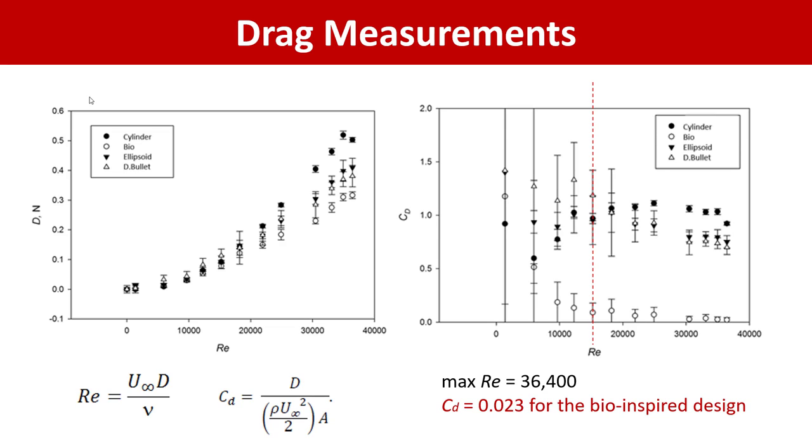If we go to the range of Reynolds number higher than 15,000, we can see that the dynamics in the performance of different designs changes. The cylinder is expected to produce higher drag than other designs. The performance of double bullet and ellipsoid is comparable within uncertainty range, although double bullet performs a little bit better. But the bio-inspired design certainly outperforms all three other designs with asymptotic value at the highest Reynolds number being 0.93.